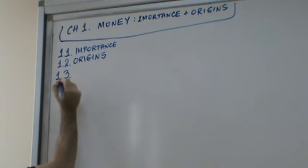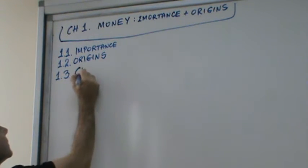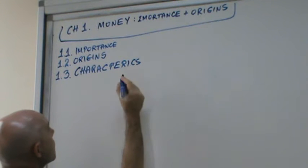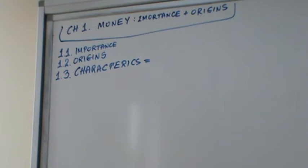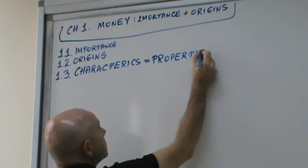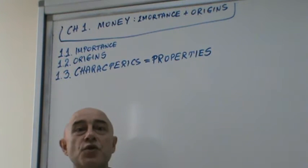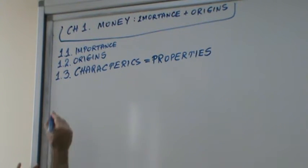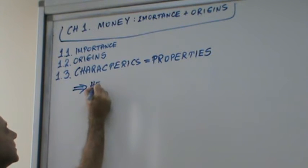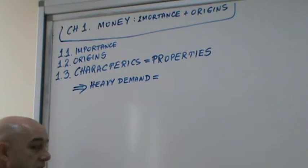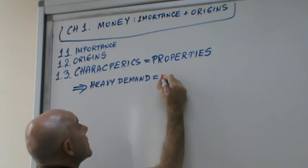Section 3 is characteristics. Characteristics of money is the same as properties. Now I will cover, the textbook gives you five or six, I'll cover and give you a few more and try to clarify. First and foremost, the textbook says that's on page 6, Heavy Demand. This is the same as marketable.